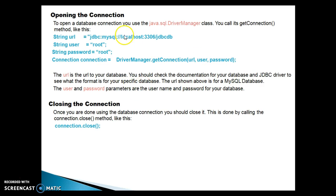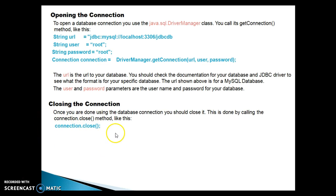The URL shown above is for the MySQL database. The username and password parameters are the username and password for your database. Now, closing the connection — once you are done using the database connection you should close it. This is done by calling the close() method on the connection object. We used to close this resource in the finally block, but since the Connection interface in the java.sql package implements AutoCloseable, there is a very useful feature added in JDK 1.7 called try-with-resources. If you use try-with-resources you don't need to explicitly close the connection object in the finally block. We'll see these things in the practical example.